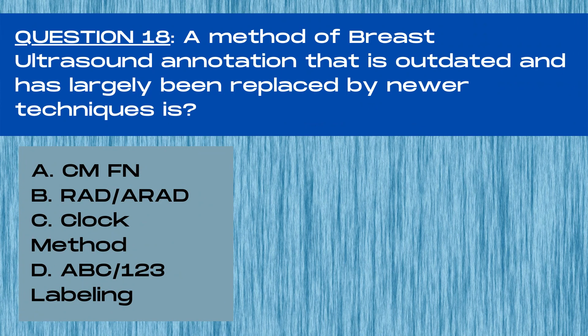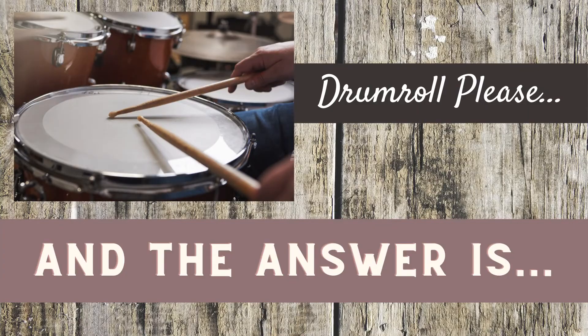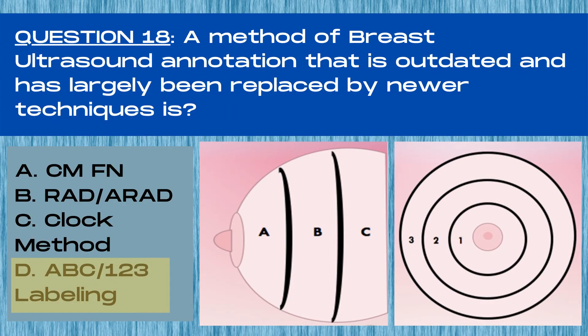Question 18. A method of breast ultrasound annotation that is outdated and has largely been replaced by newer techniques is: A centimeters from nipple, B radial and antiradial, C clock method, or D ABC and 1-2-3 labeling? The answer is D, ABC and 1-2-3 labeling methods. It's important to learn these methods since they are occasionally found in practice, and it's important to know what a 1, 2, or 3 or ABC on an image represents. However, newer techniques such as centimeters from nipple are more reproducible and have largely replaced the outdated techniques of ABC and 1-2-3 labeling.